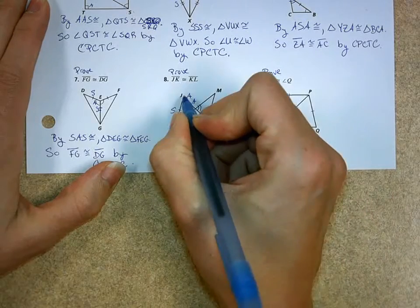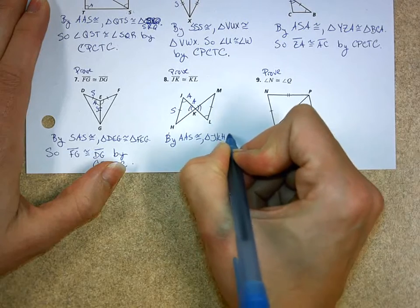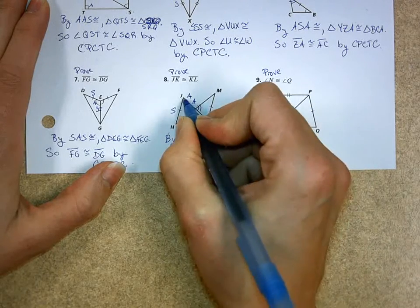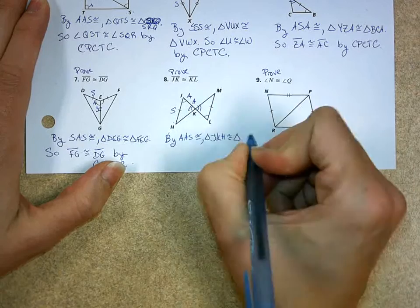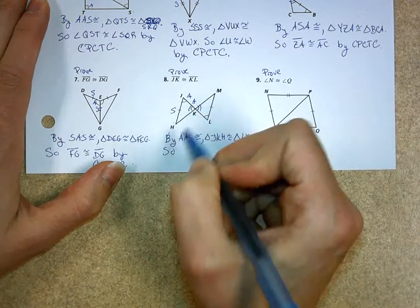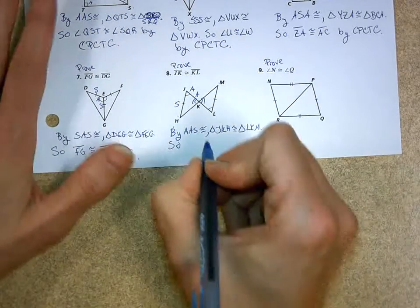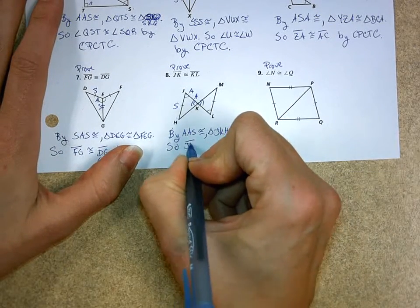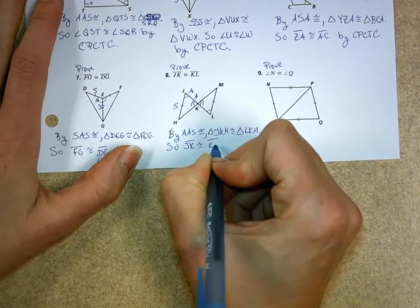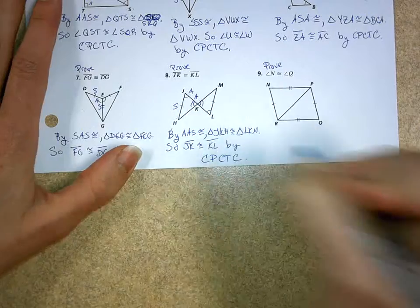Triangle, let's go JKH, is congruent to triangle. If I go JKH, I'm going to have to go LKM. So what do we know about these two segments right here, JK and KL? They're congruent. So segment JK is congruent to segment KL by corresponding parts of congruent triangles are congruent.